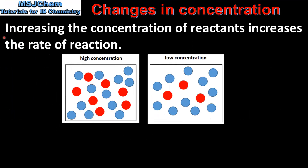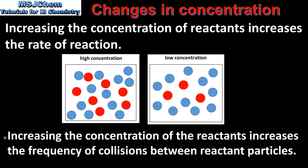Next, we look at changes in concentration. Increasing the concentration of reactants increases the rate of reaction. Here we have two solutions with the higher concentration solution on the left and the lower concentration solution on the right. The rate of reaction will be faster with a solution of higher concentration. The reason for this is that increasing the concentration of the reactants increases the frequency of collisions between reactant particles. The greater the concentration of reactant particles in solution, the higher the chance of a successful collision leading to a chemical reaction.